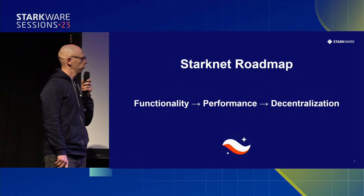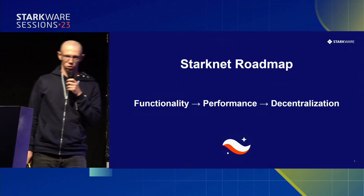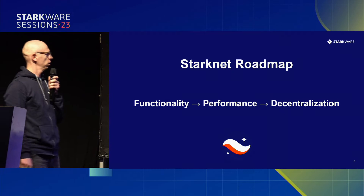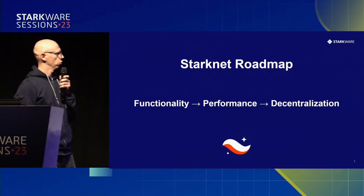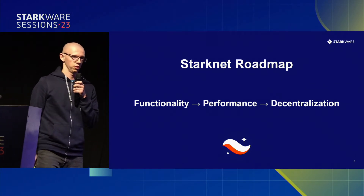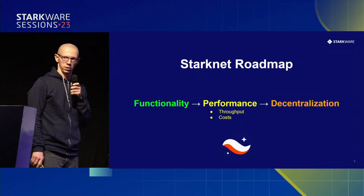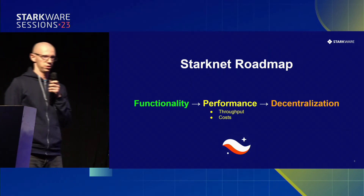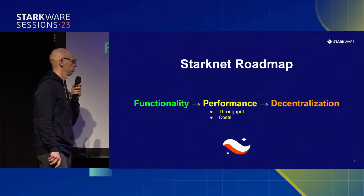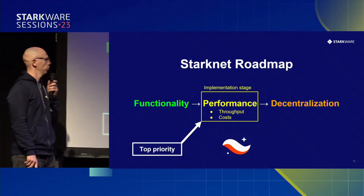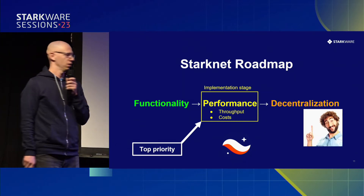So what's our roadmap towards decentralization? The way we decided to go after it is to start with functionality, then improve performance, and then go to decentralization — because decentralization gets in the way of the other two. By performance we mean increasing throughput and reducing costs. Functionality we have, performance we're working on, and decentralization is something I owe you.